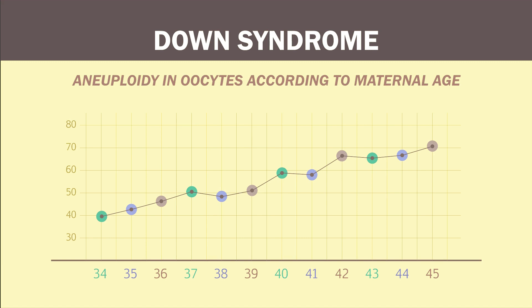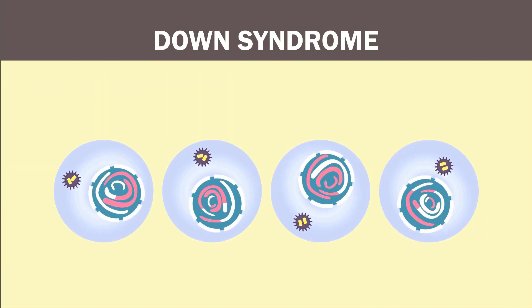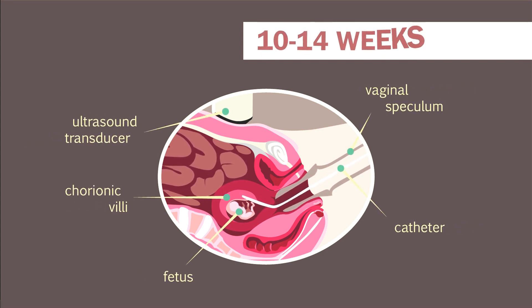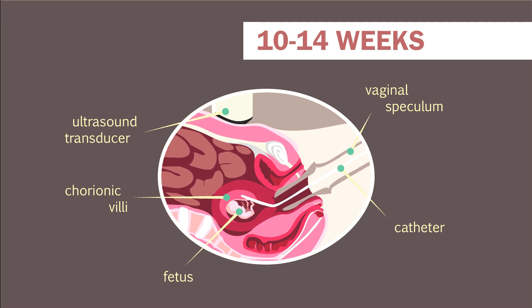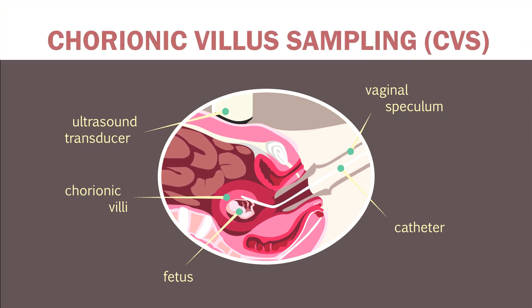Age is only a risk factor for Down syndrome, however. To conclusively diagnose this or another aneuploidy before birth, we need to obtain cells, and thus genetic material, from the growing pregnancy. This can be done in two ways. First, we can obtain sample placental cells, usually between 10 and 14 weeks of gestation, by advancing a needle through the vagina or abdomen to the placenta to extract a small amount of tissue for analysis. This type of analysis is called chorionic villus sampling.